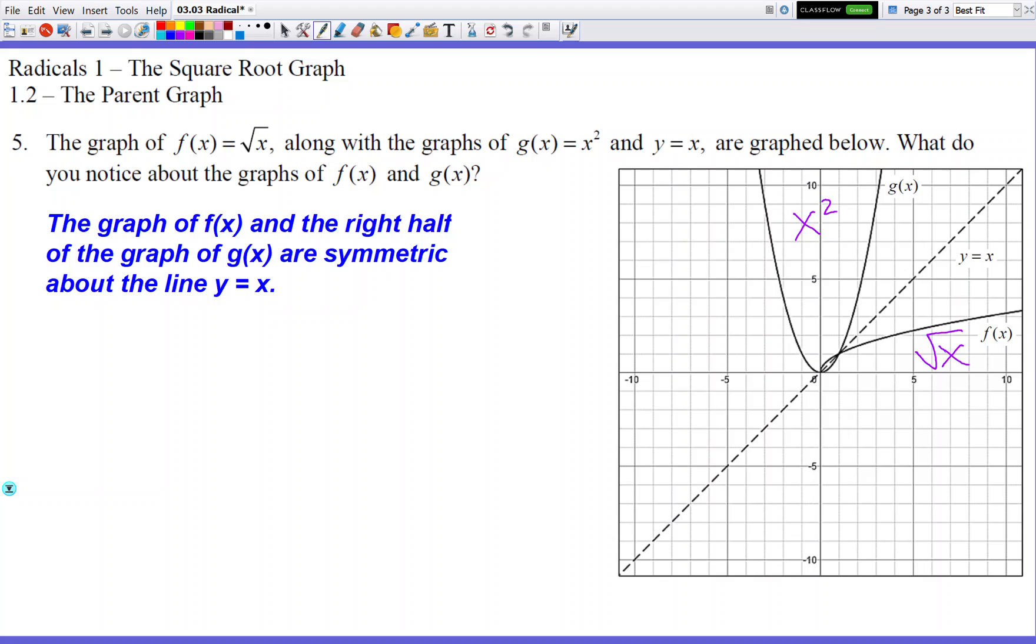And this is because they are inverse functions to each other. They're inverses of each other. And because they're inverses, when you graph them, they're going to be symmetric about the y equals x diagonal line.